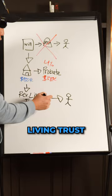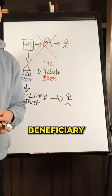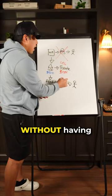Put your house into a revocable living trust and then put your kids as a beneficiary, so that way the house transfers to them without having to go through probate.